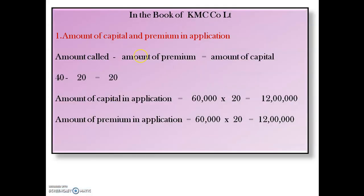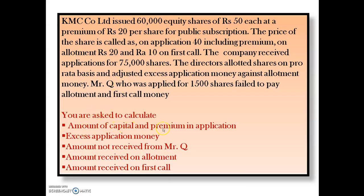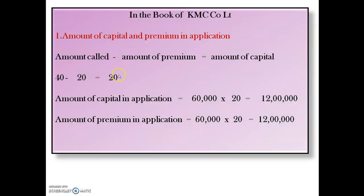Working Note 1: Amount of capital and premium in application. Formula: Amount called minus amount of premium equals amount of capital. Amount called on application is ₹40, premium is ₹20, so capital is ₹20. Amount of capital in application: 60,000 × ₹20 = ₹12 lakh. Amount of premium in application: 60,000 × ₹20 = ₹12 lakh.